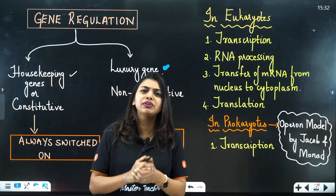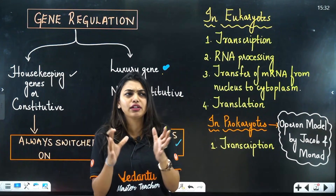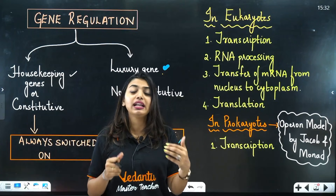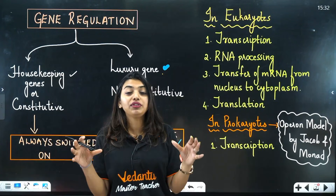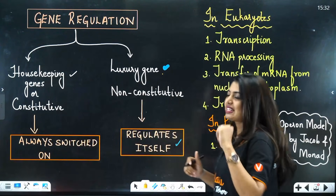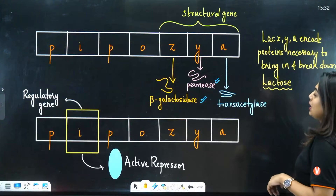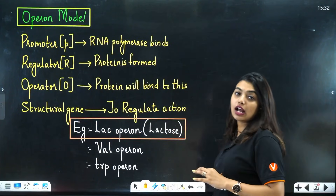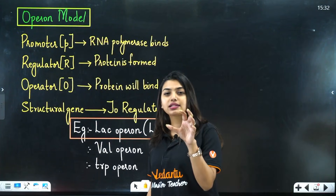This was found through the operon model, called the operon model by Jacob and Monod. They noticed that many genes are regulated together, and we'll see who is controlling them.